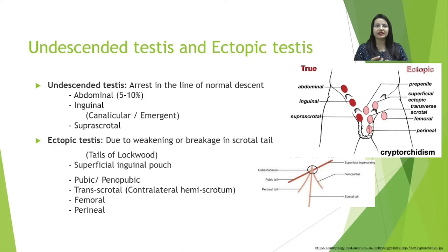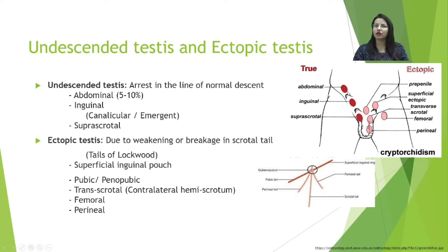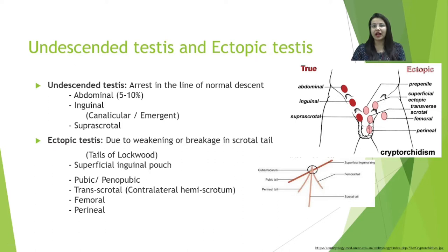There are various types of cryptorchidism. Undescended testis forms the largest chunk and is due to arrest in the line of normal descent. The testis can be abdominal (higher or lower), inguinal (within the canal or emergent at the superficial inguinal ring), or supra-scrotal but not at the base of the scrotum. Any defect or arrest in this line of descent is termed undescended testis.